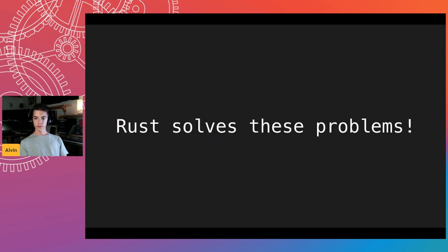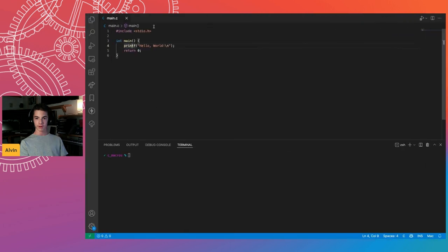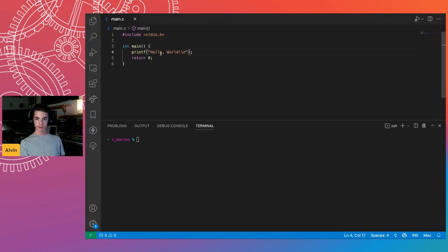Rust solves all these problems. You don't have to think about string replacement — it correctly groups together expressions, so you never have these problems. I actually experimented with C macros and found out they can do some very crazy stuff.